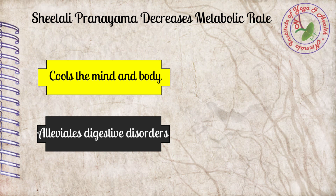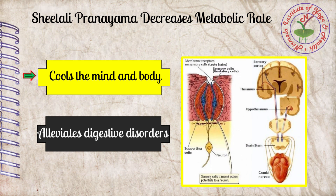Shreetali pranayama decreases metabolic rate. In this practice, inhalation is performed by rolling the tongue and exhalation from the nose. When air passes from the rolled tongue, it goes to the lungs through the upper portions of the respiratory passages via pharynx, larynx, and trachea. This induces a cooling effect in the blood vessels of the respiratory passages, which sends neurogenic signals to the hypothalamus to reduce body temperature when it increases due to external heat.